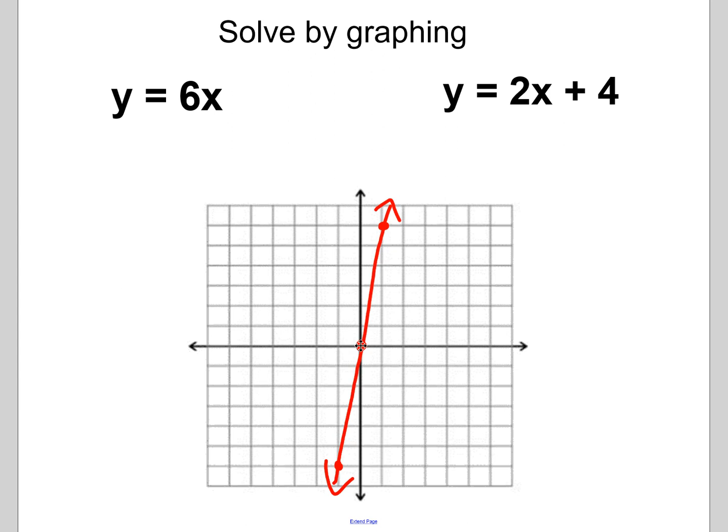If I graph the second line, we're going to start at 4 because this is my y-intercept. Then I'm going to go with a change of positive 2, so up 2 over 1. If I did another point, it would be down 2 over 1. You can see here that my point of intersection is right here.